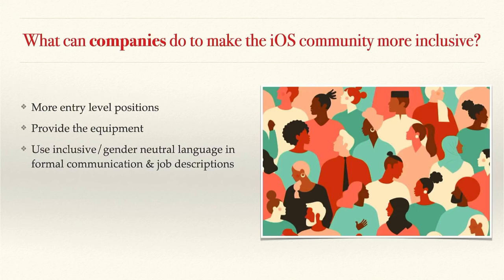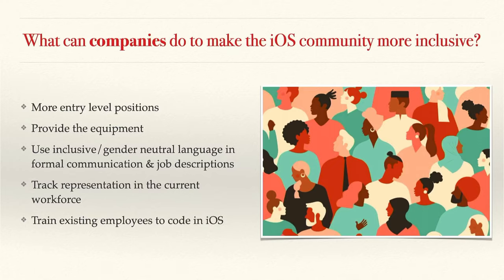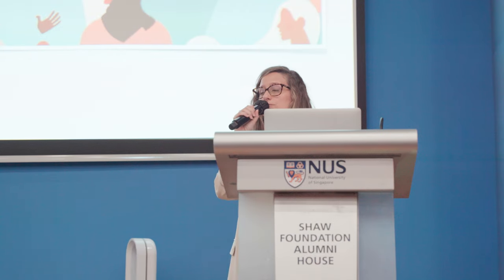Companies should use more inclusive and gender-neutral language in their formal communication and job descriptions. How many times do we say 'hey guys'? It's something I say all the time to my team, but it's not correct because you're not being considerate of other people in the room. Companies should also track representation in their current workforce — how can companies take measures that matter if they don't know where they stand? Only then can they establish a baseline and identify pain points. Companies should also try to train existing employees to code in iOS — instead of trying to find a diverse talent pool externally, they can turn to the women or people of color in their own workforce and hold introductory workshops in iOS development.